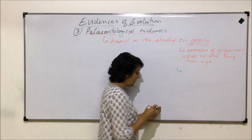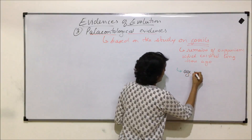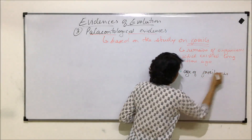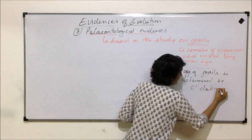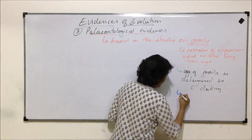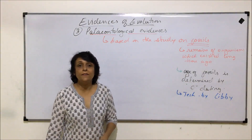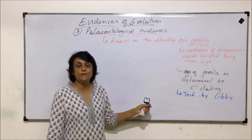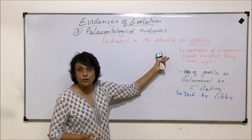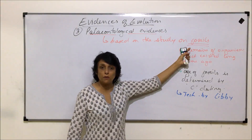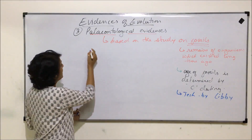The age of these fossils — how old they are — is determined by a technique called carbon dating. This technique was given by Libby. It helps us identify the time period, or how many thousands or millions of years ago these organisms existed, because these organisms no longer exist and we are only finding their fossils.